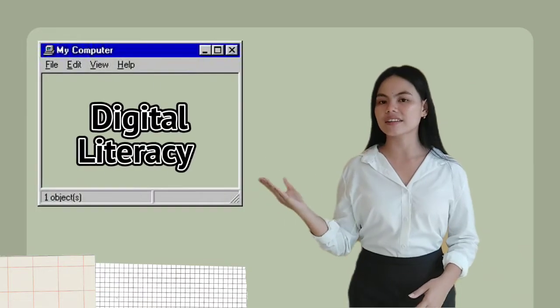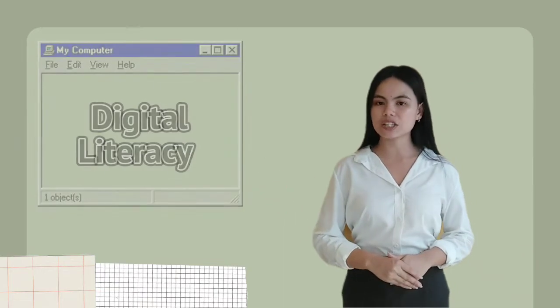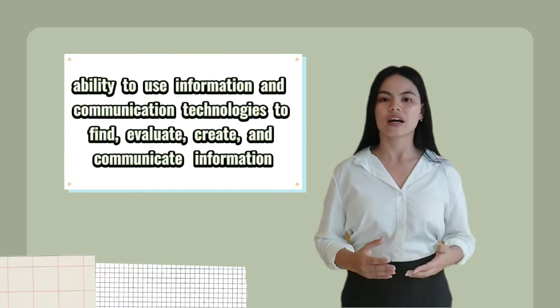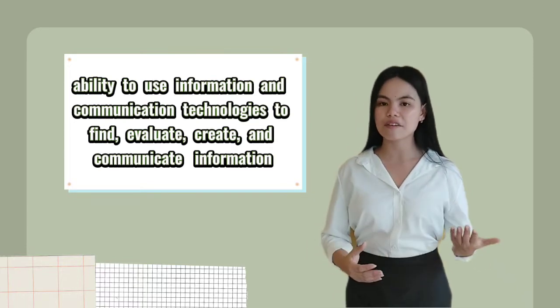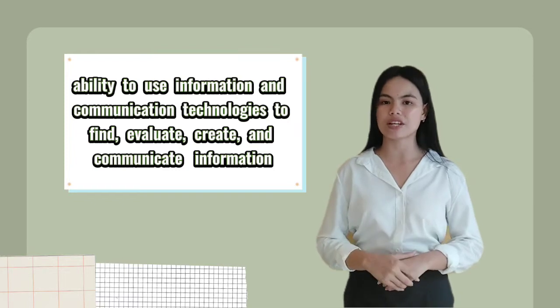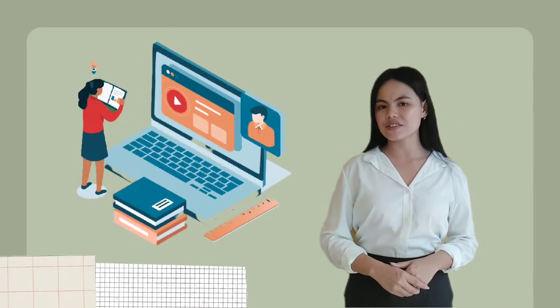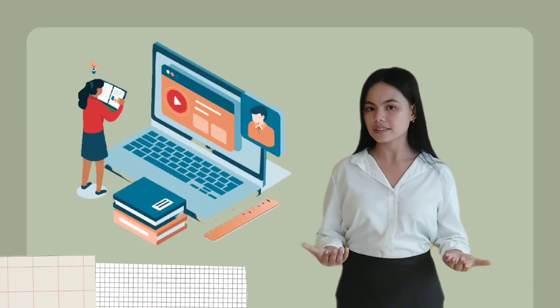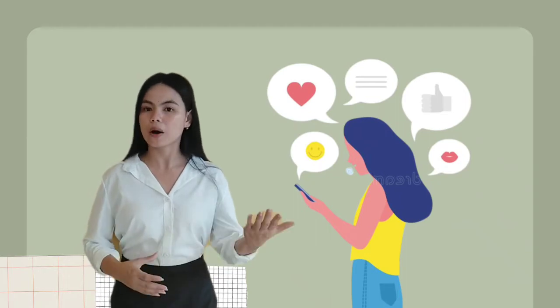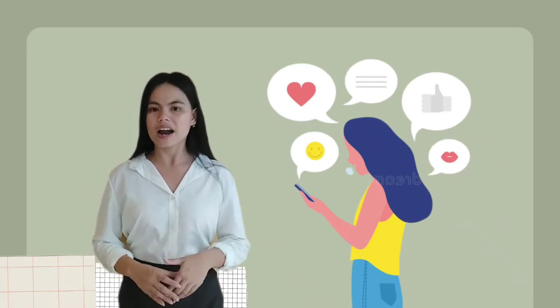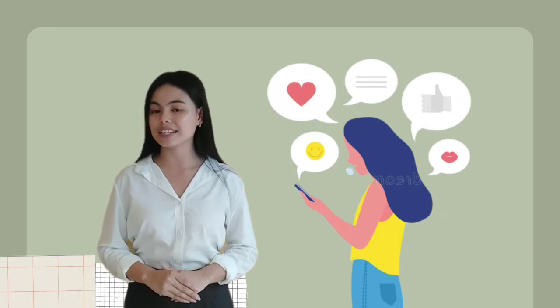The third one is digital literacy. It is the ability to use information and communication technologies to find, evaluate, and create, and also communicate information, requiring both cognitive and technical skills. Evaluating online resources to make sure they are truthful and accurate, and learning how to find information on a specific topic on the internet. It is important to understand that digital natives who know how to send a text message and post on social media are not always really considered digitally literate.